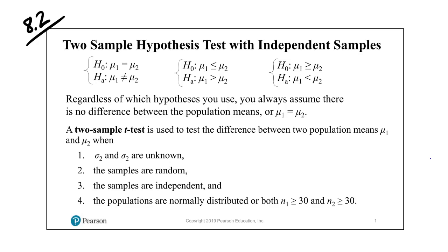Let's take a look at the two-sample hypothesis test with independent samples, specifically dealing with the difference between the population means μ1 and μ2. We have two populations, population 1 and population 2, and we're trying to talk about the potential difference in the means of those populations. We'll call μ1 the mean from population 1, and μ2 the mean from population 2.